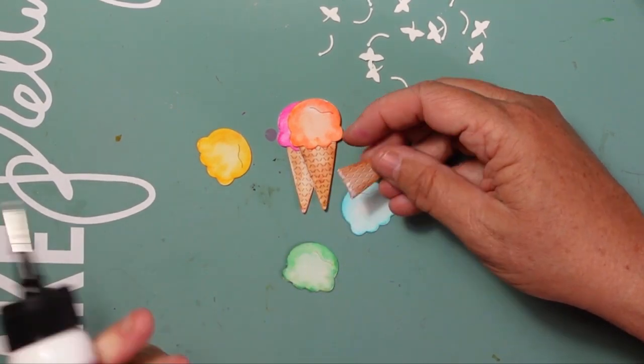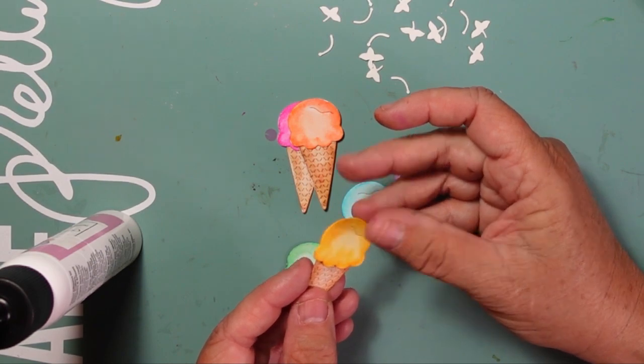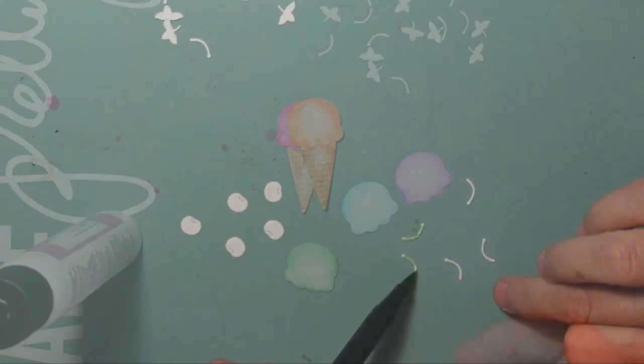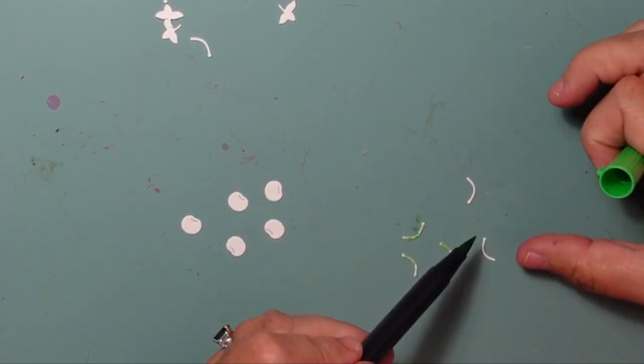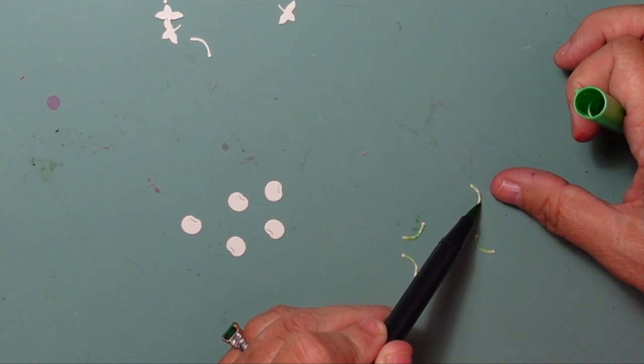I want to make sure that my cones are all the same height because I am going to repeat a pattern with these cones on my card. This is a great way to do that—just use a little bit of wet adhesive and then align it with one of the other ice cream cones, making sure that all of your cones are aligned evenly.